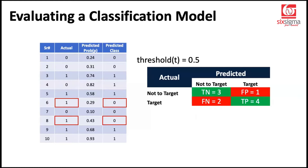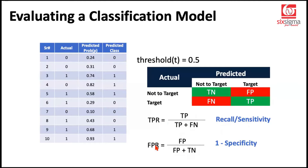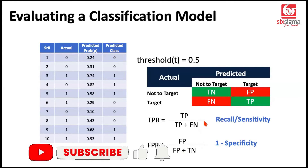Now let's look at the true positive rate (TPR or recall) and the false positive rate (FPR). TPR is true positives divided by true positives plus false negatives. FPR is false positives divided by false positives plus true negatives. Other names: TPR is also called recall and sensitivity. FPR is also known as one minus specificity, where specificity is true negatives divided by true negatives plus false positives.